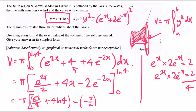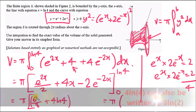Combining everything: π times (63/8 + 3/2). Converting 3/2 to eighths gives 12/8, so 63/8 + 12/8 = 75/8. Therefore the final answer for the volume is 75π/8.